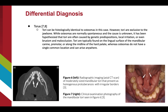The first differential diagnosis associated with an osteoma is a torus. Torii can often be histologically identical to osteomas; however, they remain exclusive to the jawbone. While osteomas are normally spontaneous and idiopathic, it has been hypothesized that torii may have site-specific causes such as genetic predispositions, local irritation, and bruxism or malocclusion. Torii are typically found on the lingual surface of the mandibular canine-premolar area or along the midline of the hard palate, as opposed to osteomas, which can arise anywhere.